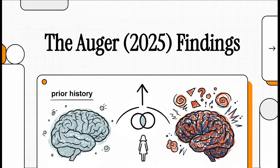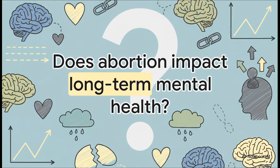We're looking at the Auger findings from 2025. Here's the central question: Does abortion have an impact on long-term mental health? For years, researchers have been grappling with this, but a lot of previous work had some pretty serious limitations. But now, this 2025 study from Auger and her team sets out to give us one of the clearest pictures we've ever had. Let's see what they found out.